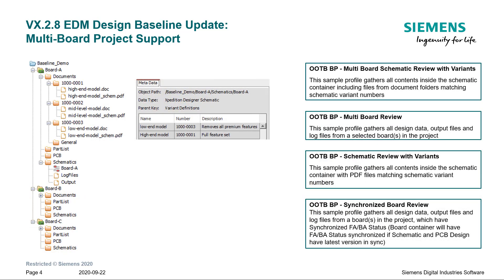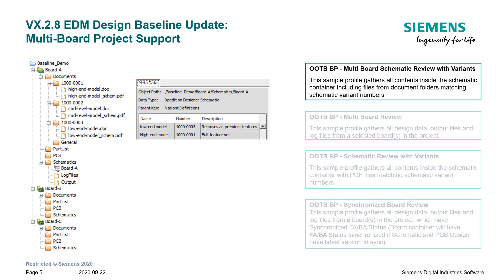Within the VX.2.8 install, we bring four out-of-the-box baseline profiles to show a few ways that filtering rules can be applied. As an example, we will demo the multiboard schematic review with variance baseline profile with the multiboard project shown here. This profile gathers all contents inside the schematic container, including files from document folders matching schematic variant numbers.